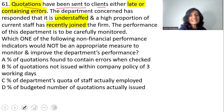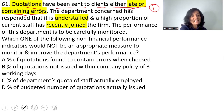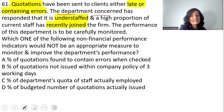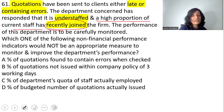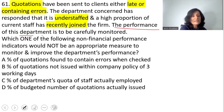Quotations have been sent to clients either late or containing errors — that is the first problem. The department concerned has responded that it is understaffed — that's the second problem. A high proportion of current staff has recently joined — that's the third problem: the presence of new employees. The performance of this department is to be carefully monitored.